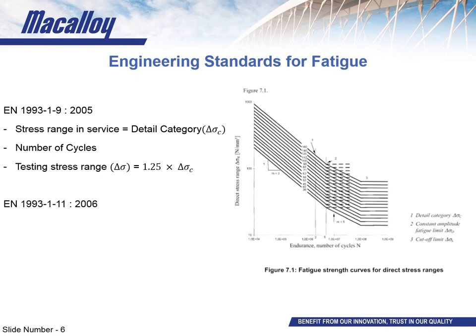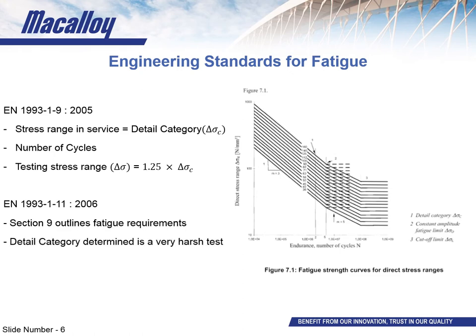The second standard is EN 1993 part 1 part 11, which covers tension components within a structure in general. Section 9 of part 11 outlines the fatigue requirements for tension components and gives the detail category to be used for tension rods when testing. While it's always good to adhere to European standards, the stress range specified in part 11 is extremely demanding — in excess of 131 N/mm². This makes designing a fatigue system that adheres to part 1 part 11 much more difficult than designing one that specifically meets the fatigue requirements of an individual structure, and this is worth bearing in mind when specifying requirements.